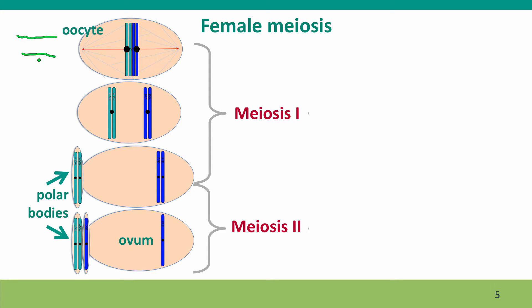What about female meiosis? It's quite different. The female cell that undergoes meiosis is called the oocyte. Although the behavior of the chromosomes is similar, the cell divisions are quite different — because the female egg needs to contain lots of resources to support the initial growth of the embryo. It would be wasteful to split those resources between four daughter cells, so all of the resources wind up in the final cell, the product of meiosis, which is called an ovum.